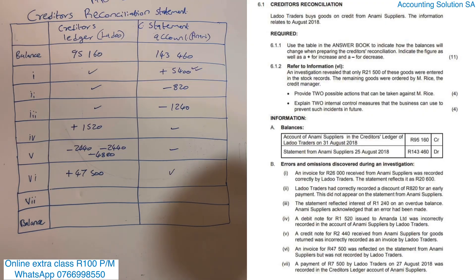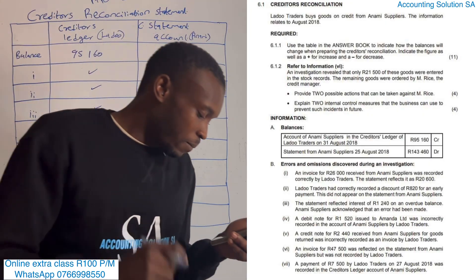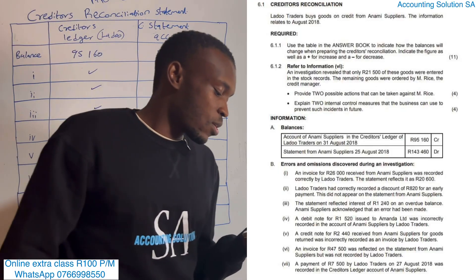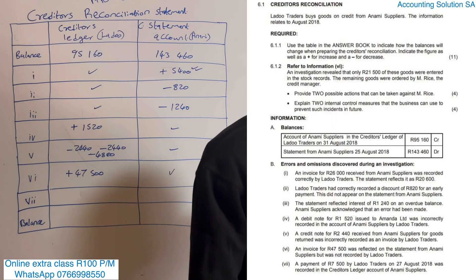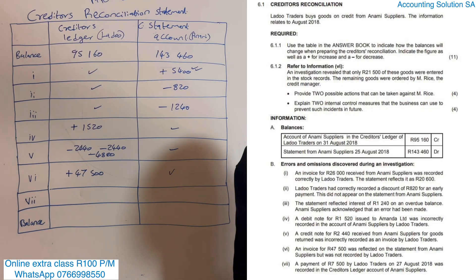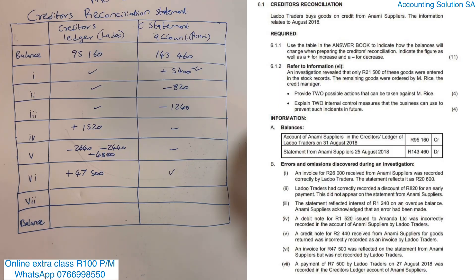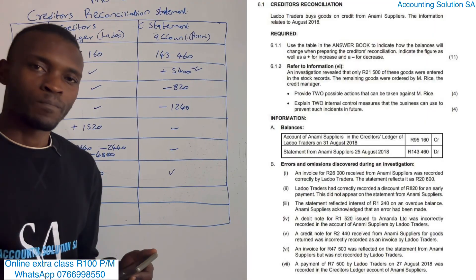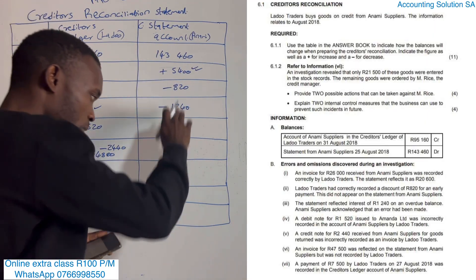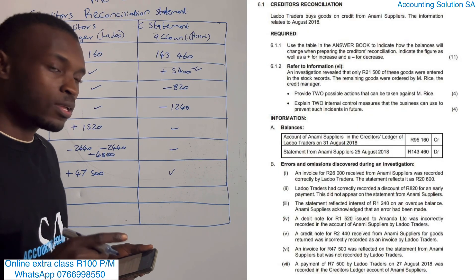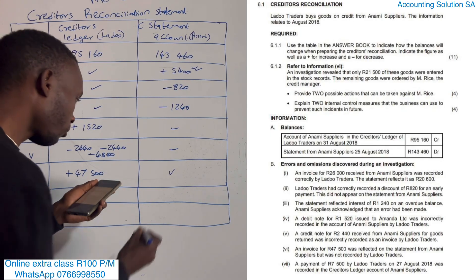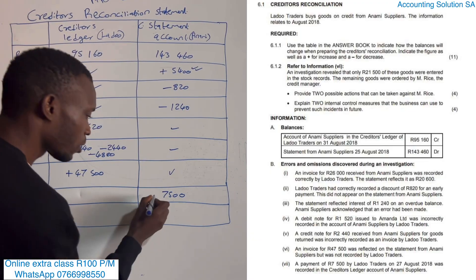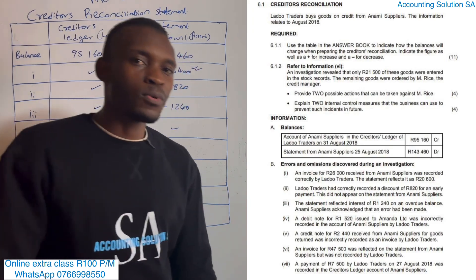The last one: a payment of 7,500 by Ladu Traders on 27 August 2018 was recorded in the creditors ledger account of Army supplier. The issue is that we made a payment, but our supplier recorded it in the creditors ledger account in their books. They were not supposed to record it in their books - they had to record it in their statement, on the statement of Army. So we have to rectify by recording the amount of 7,500 on the statement side. Payment reduces liability, so it is minus 7,500.